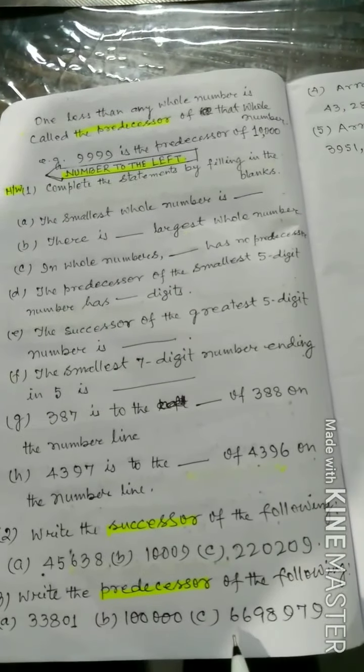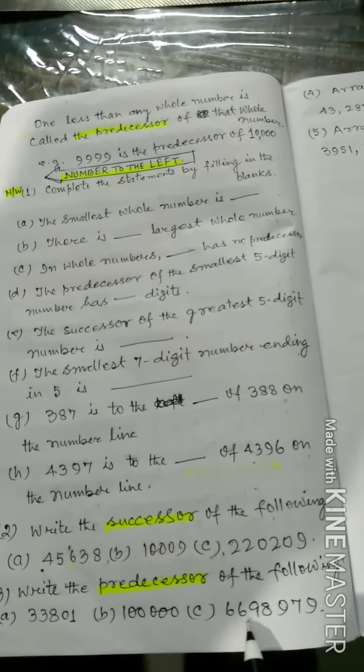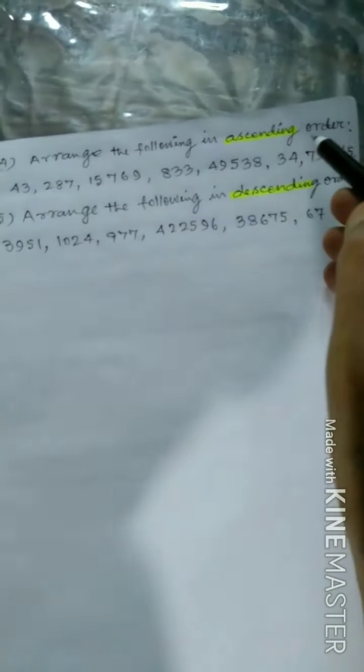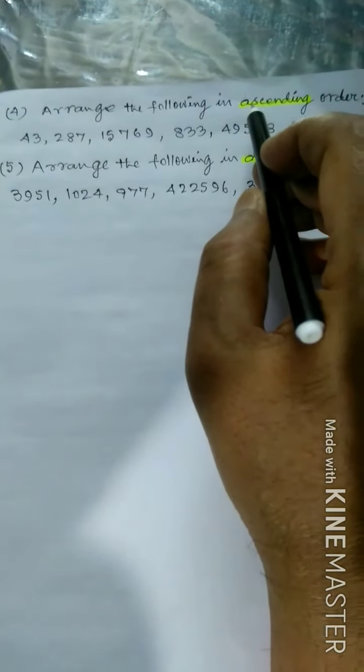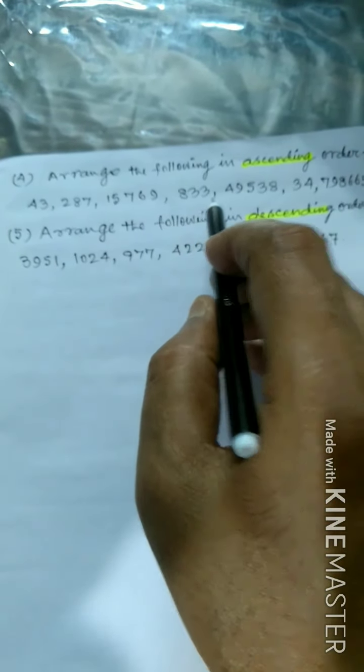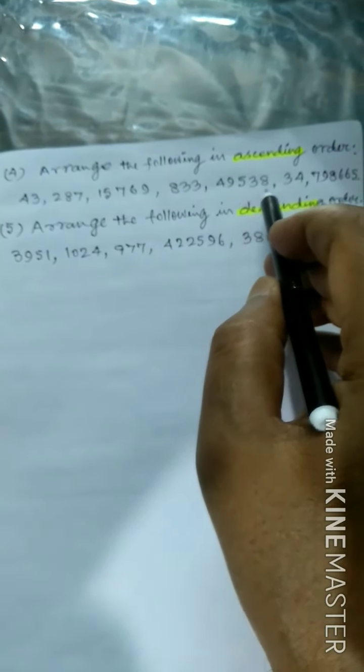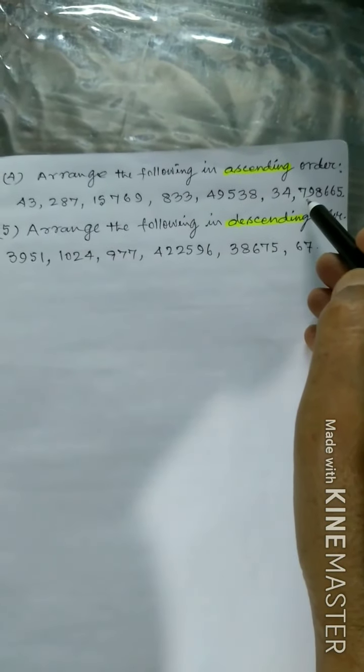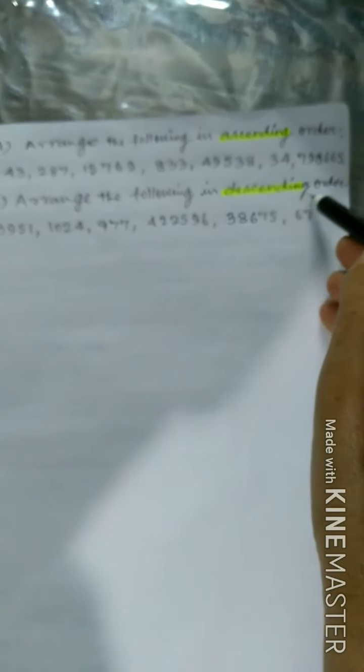Arrange the following in ascending order. Ascending order means increasing order, that is increasing order: 43,287, 15,769, 833, 49,538, 34,347, 98,665.